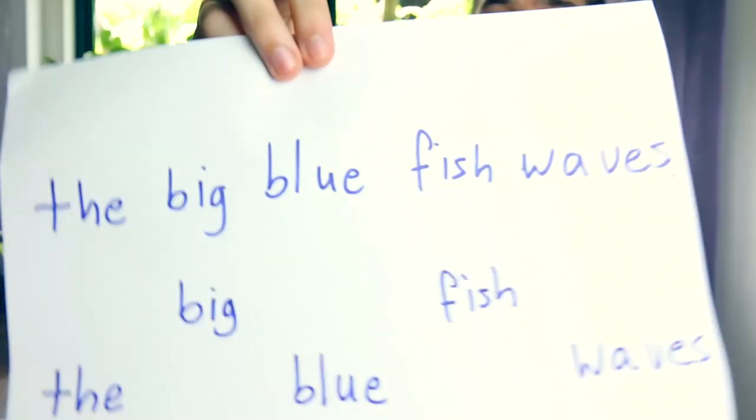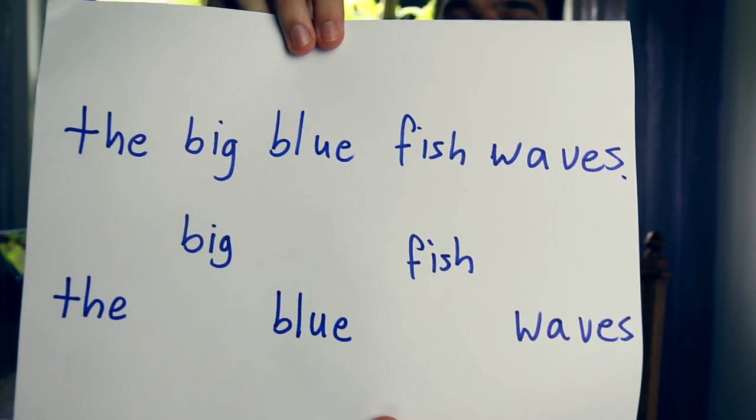Let me give you an example of how this works. I start with writing just one sentence — in this case: 'The big blue fish waves.' That's my starting point and it's a perfectly correct sentence. But I can also split it into two sentences by writing the same words alternating between high and low notes. So now I have two very short sentences: 'Big fish' and 'the blue waves.'